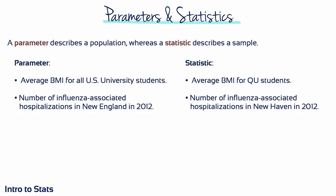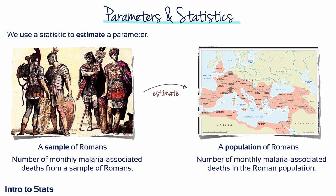A characteristic that describes a population, usually a numerical value, is referred to as a parameter. While a characteristic that describes a sample is called a statistic. Typically, every population parameter has a corresponding sample statistic.